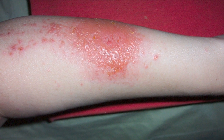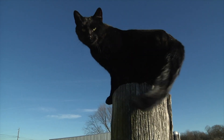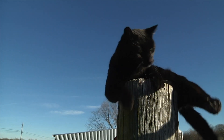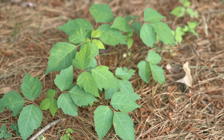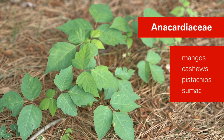Urushiol only seems to cause an immune response in humans, but other animals can spread the oil from their fur onto other surfaces. Poison ivy is in a family of plants called the Anacardiaceae, so it is related to mangoes and cashews as well as pistachios and sumac. Mangoes have a small amount of urushiol near the skins of the fruit, so avoid the outermost flesh if you are sensitive to urushiol.